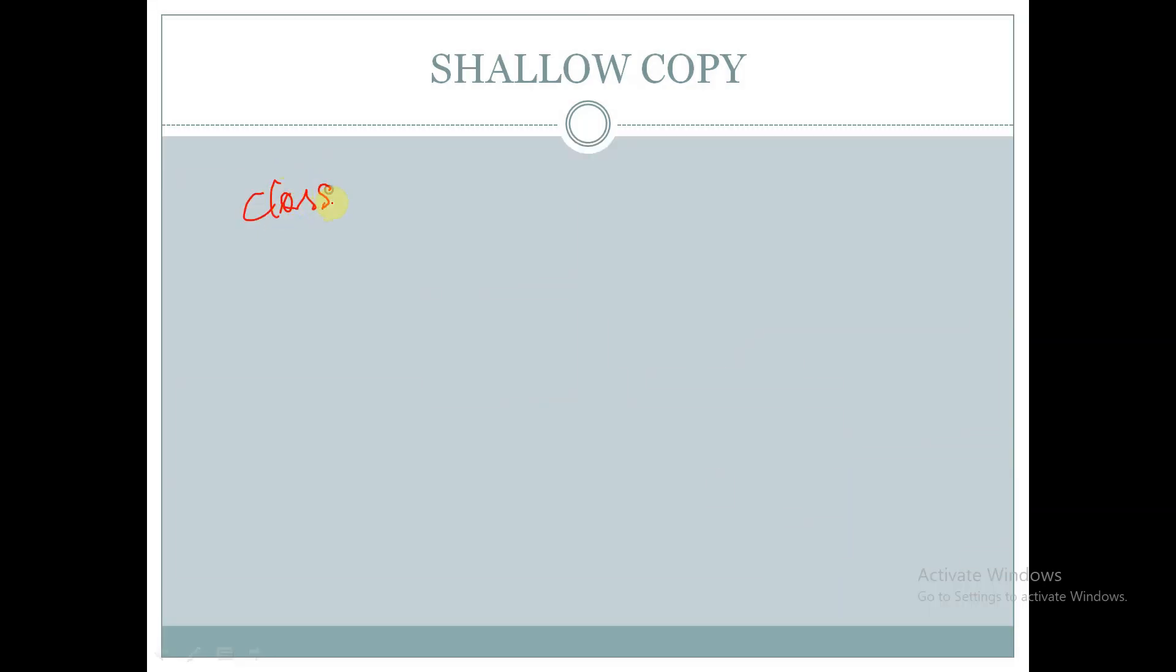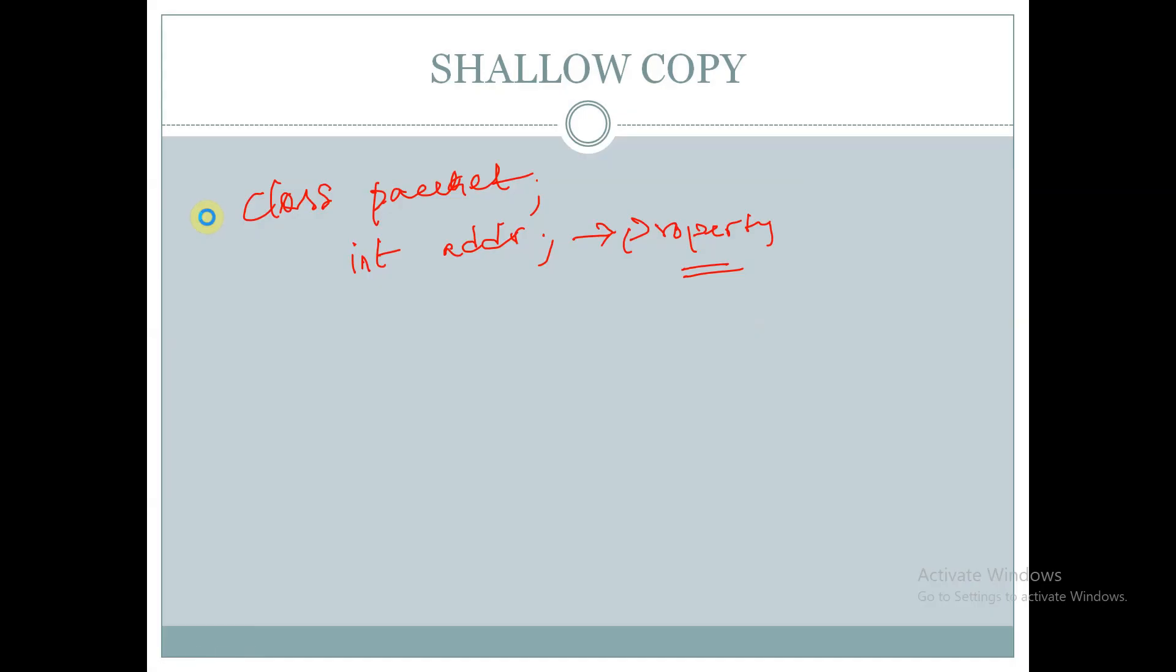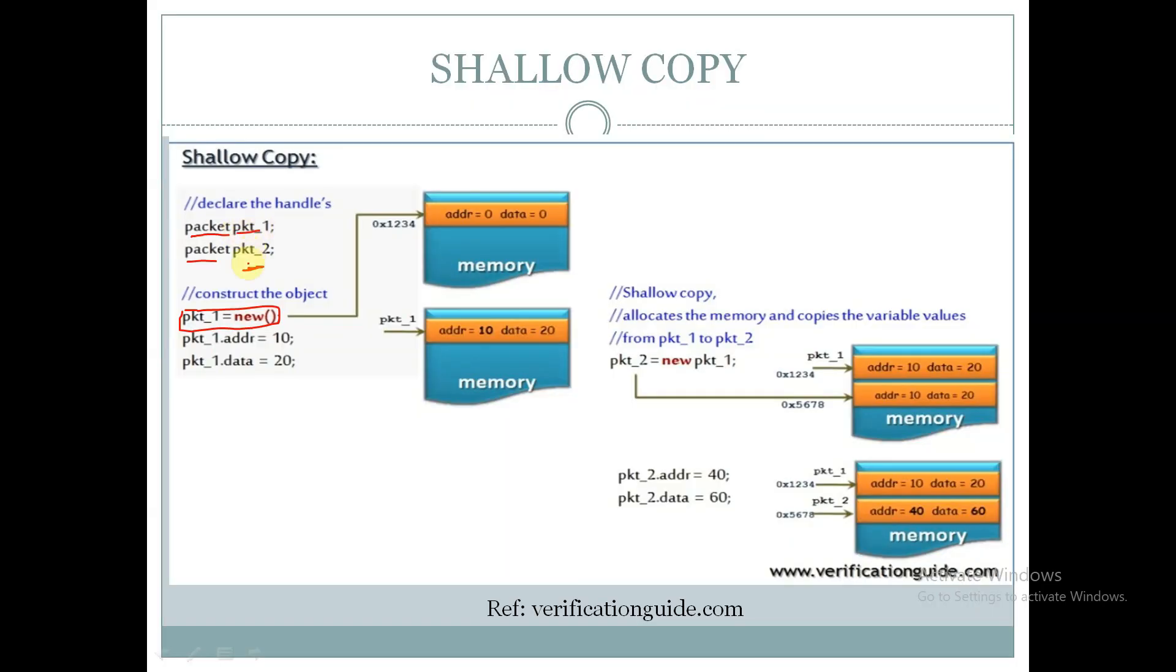Let us take a class called Packet and this class has property address. For this class we are creating handles pkt1 and pkt2, and we are creating an object for pkt1 by using pkt1 equal to new.